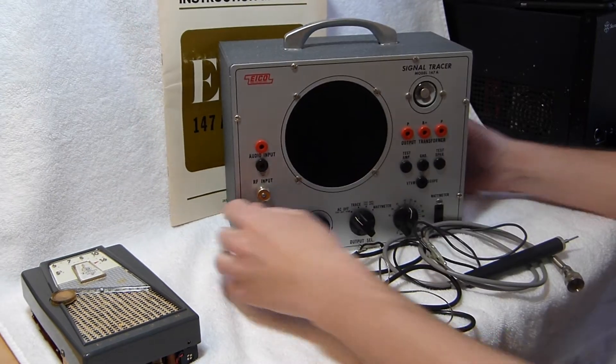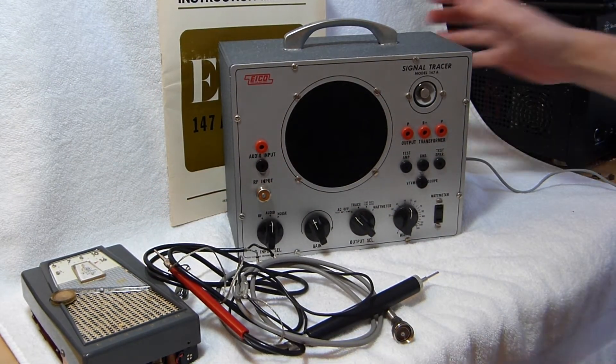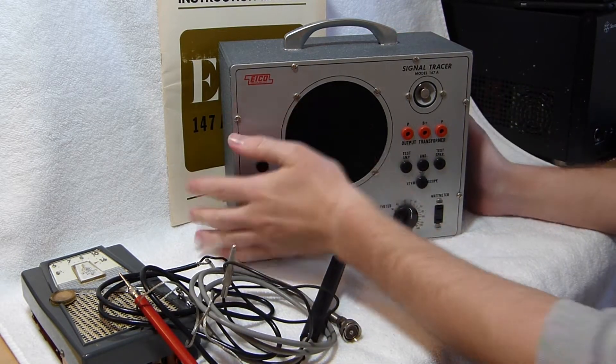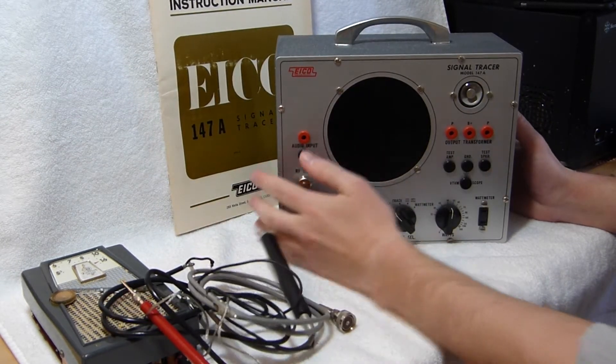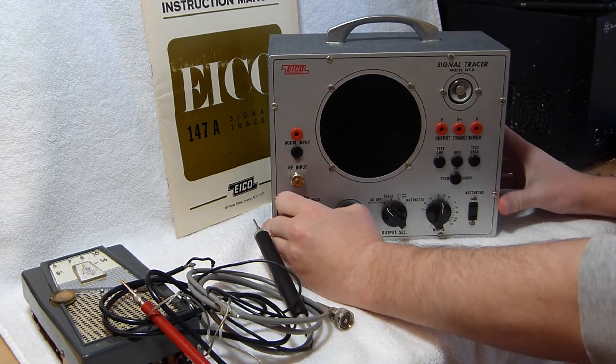Here's an EICO model 147A signal tracer. This is my first real attempt at using the tripod, so apologies if the video isn't perfect.